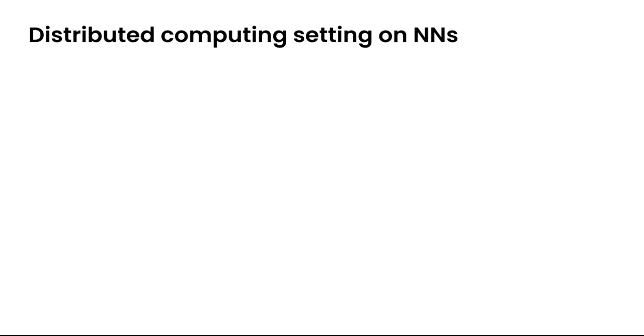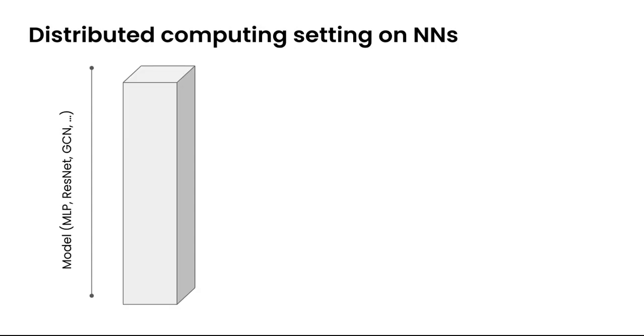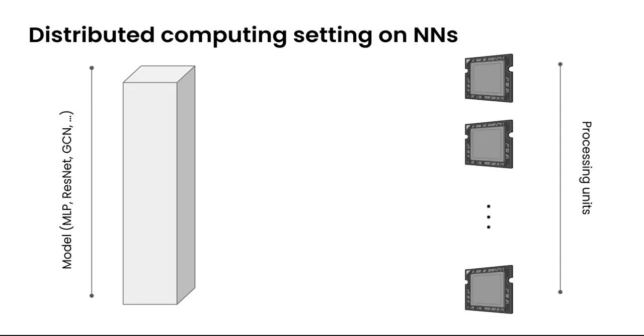At first let's set up some notation. We consider the problem of neural network training denoted here abstractly as a box with parameters over a distributed system with P processing units often called workers. There is also a communication link between the model and the processing units.